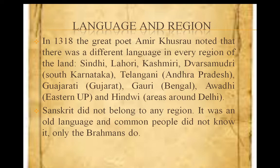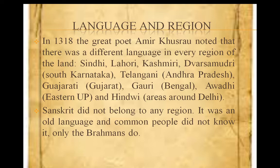We also use many Urdu words in our daily communication — that is also an influence of Mughal rule. Now let us learn the topic of Language and Region. In 1318, the great poet Amir Khusro noted that there were different languages in every region of India: Sindhi in Sindh, Lahori in Lahore, Kashmiri in Kashmir, Dwar Samudri in South Karnataka, Telangani in Telangana and Andhra Pradesh, Gujarati in Gujarat, Gauri in Bengal, and Avadhi in Eastern UP and Hindvi in Delhi. Sanskrit had no boundaries as it did not belong to any region — it was an old language and common people did not know it; only Brahmins knew this language.